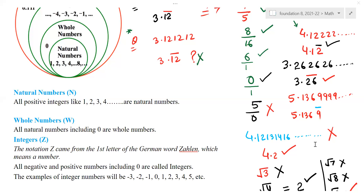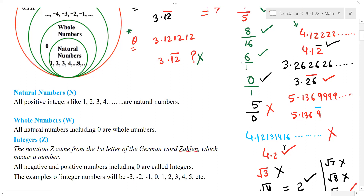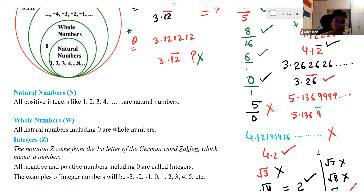Coming back — I asked: 4.1, 2, 1, 3, 1, 4 and so on — is it a rational number? No, sir, because the numbers are not recurring. Very good, it is not a rational number. 4.2? Yes, sir — because it's terminating. Terminating means it stops somewhere — that is again a rational number.